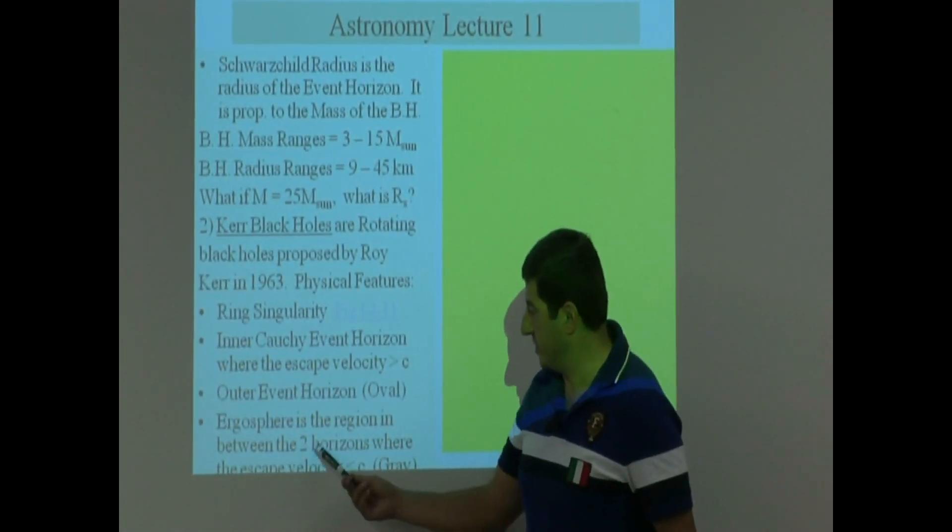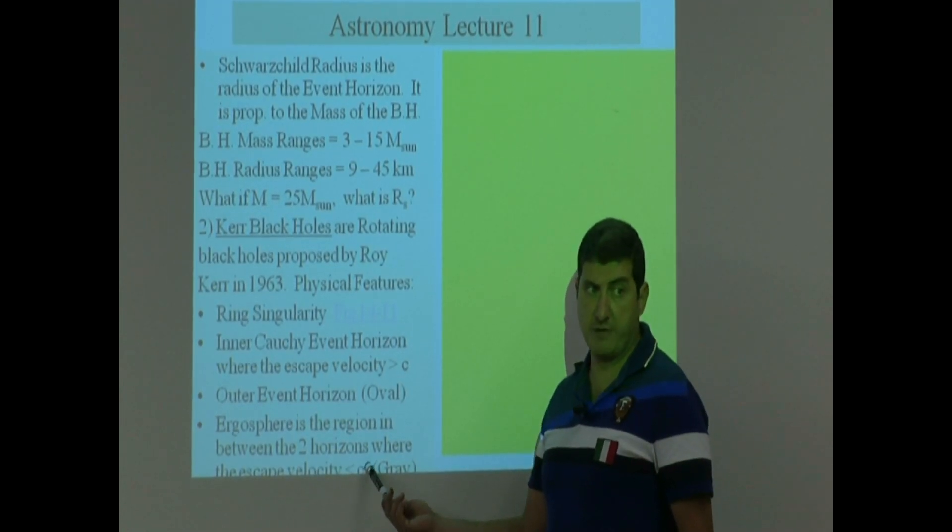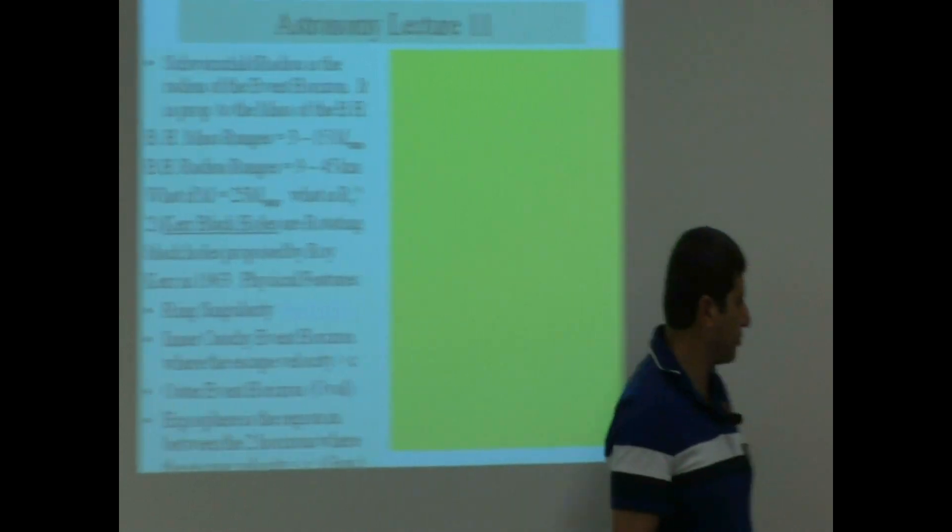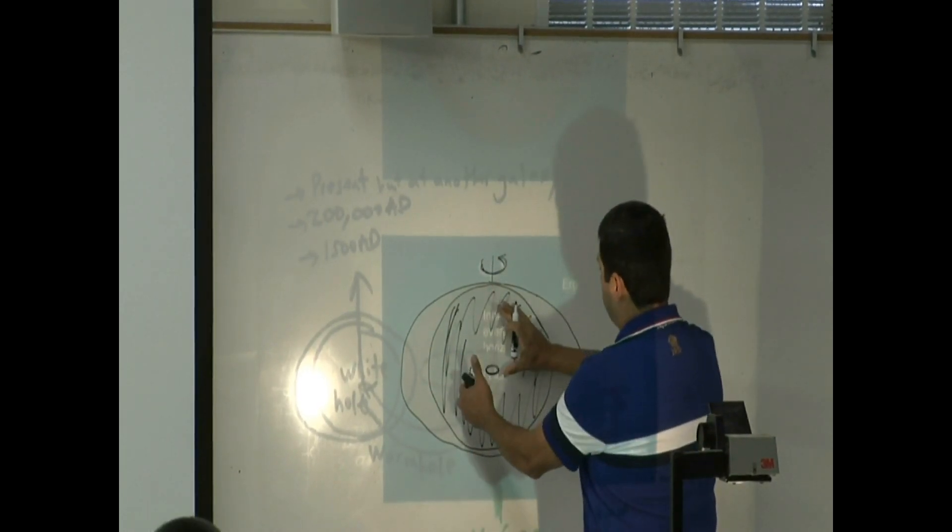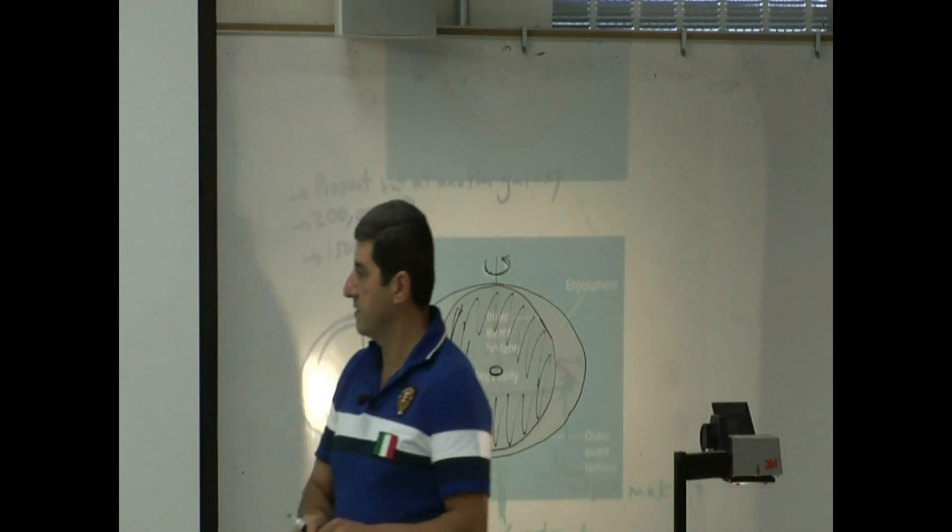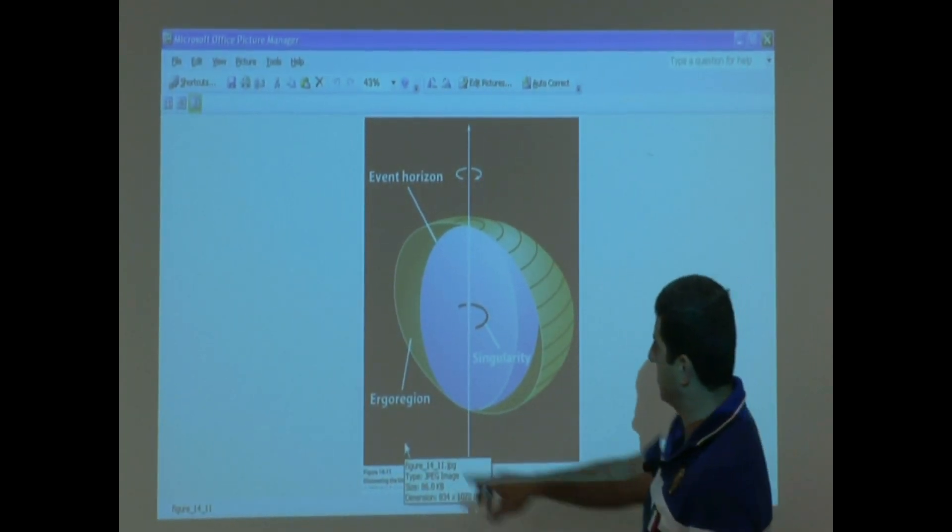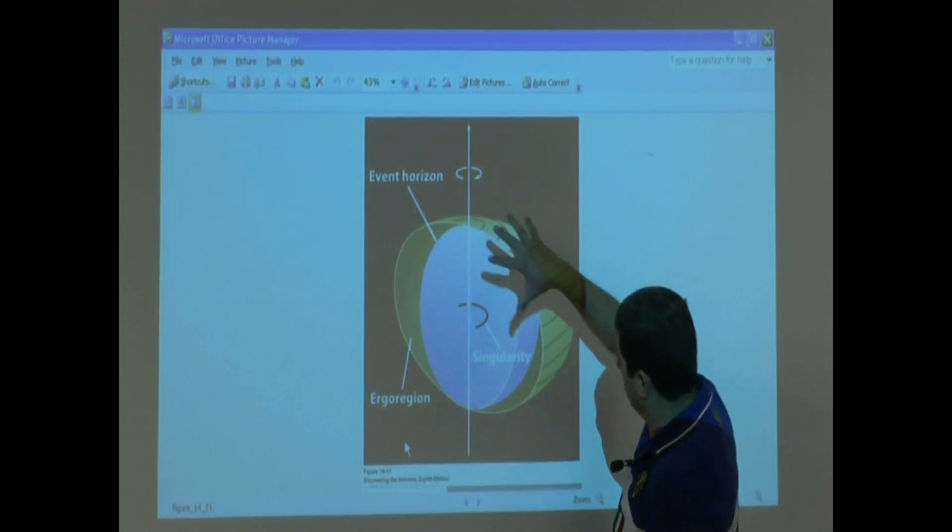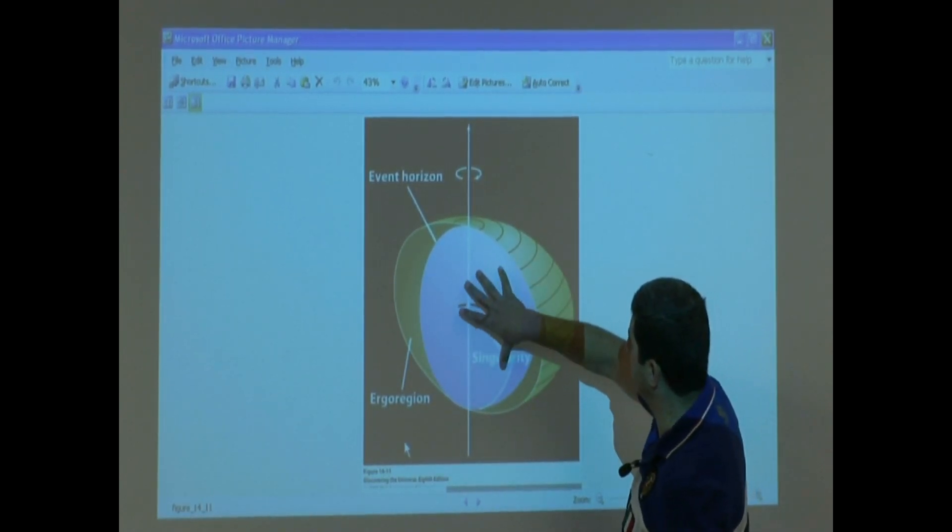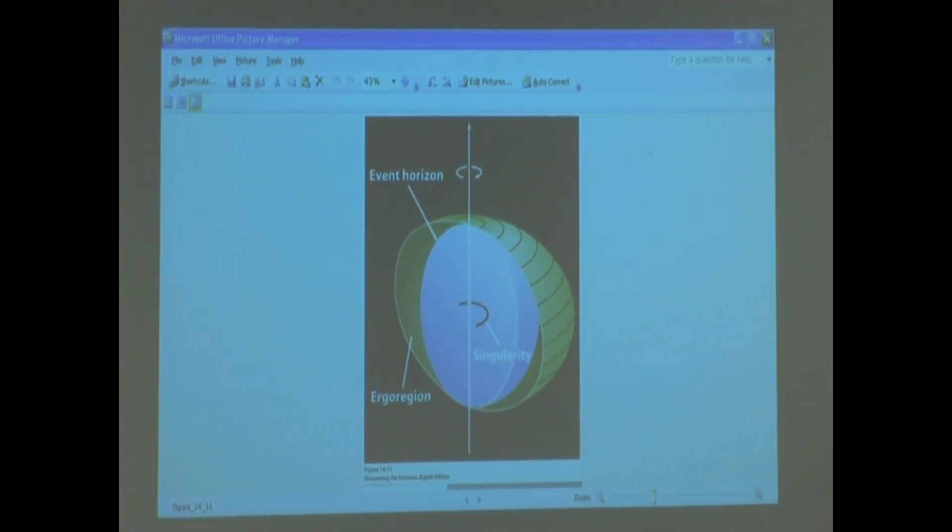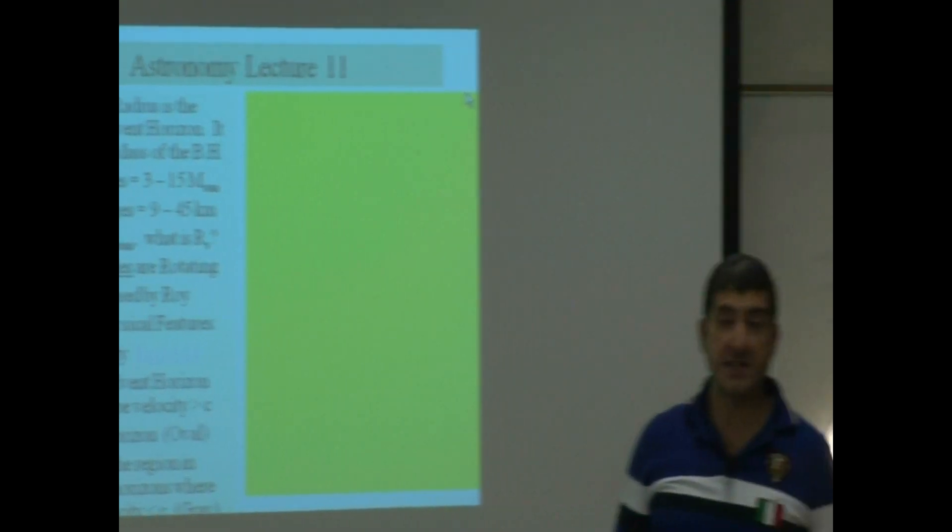And the ergosphere is the region in between the two horizons where it's actually possible to escape. So it's between the two horizons where the escape velocity is less than the speed of light. So if you go in there, you could escape it, but you've just got to go very fast. This is the dark one here. This one you can't escape, but the outer one you could escape. See here? Ergo region. They're showing you kind of from an inside view. Here's the singularity. It's a ring like that. And you've got the inner event horizon and then the outer one.